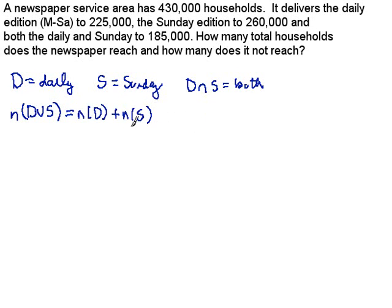But now, if we do that, remember, if we add the number of daily subscribers and Sunday subscribers, some people take both papers. So we've got to subtract off the D intersect S.